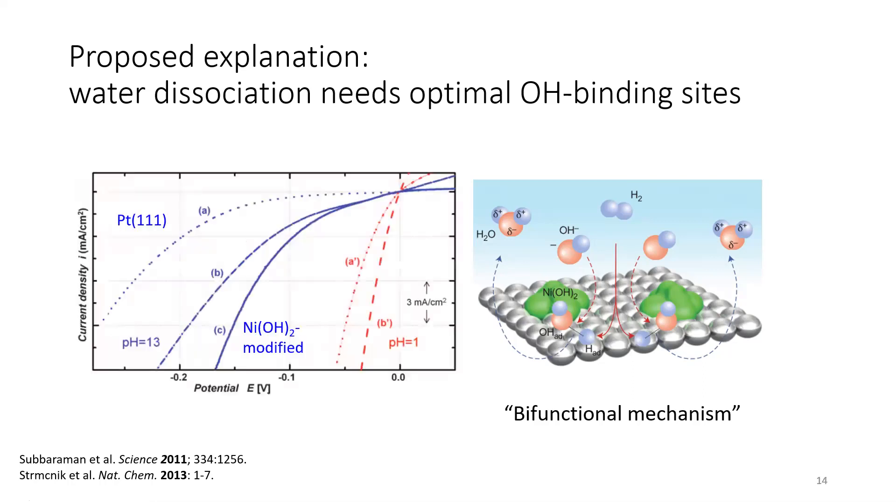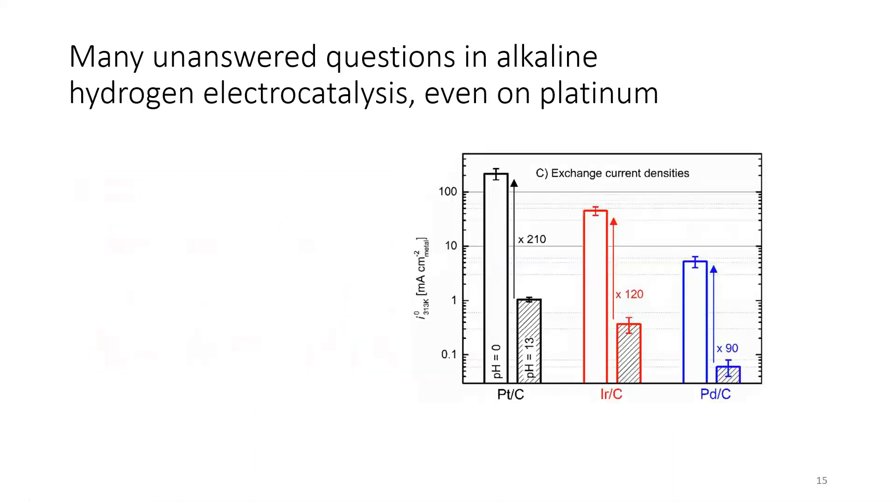We need strong OH to make that happen. And look, if we put transitional clusters, mostly nickel, on platinum-111, the reaction gets a lot faster. So this idea of the bifunctional mechanism got quite a lot of attention in literature, and it's something that we wanted to explore further. So this has been a lot of details. I hope that what I've convinced you is that there's many unanswered questions in alkaline hydrogen electrocatalysis, even on platinum.